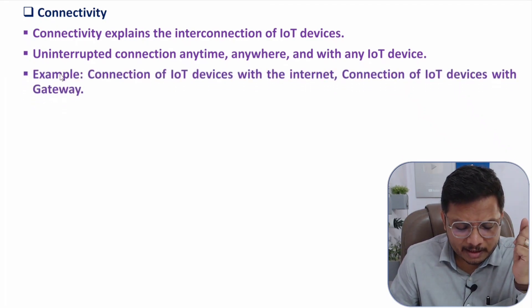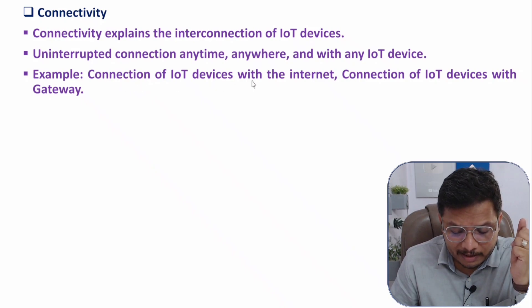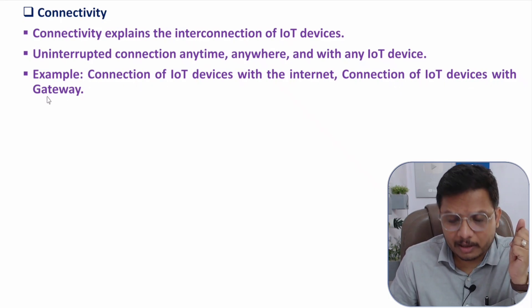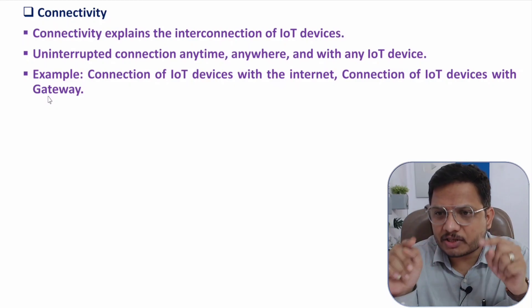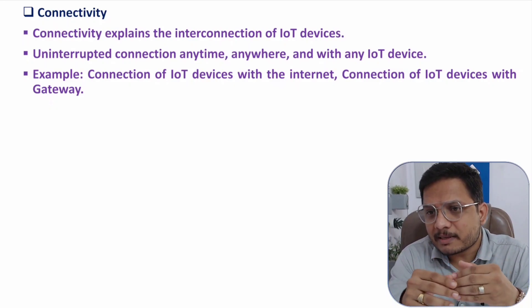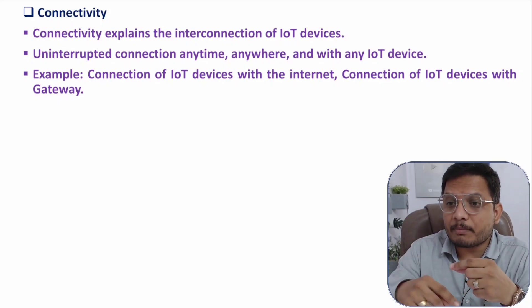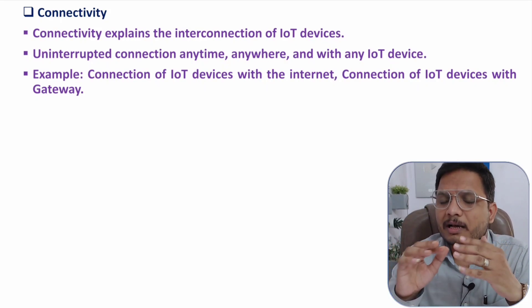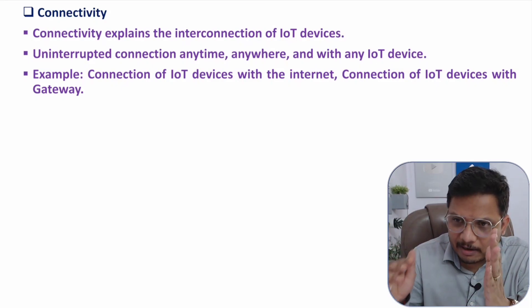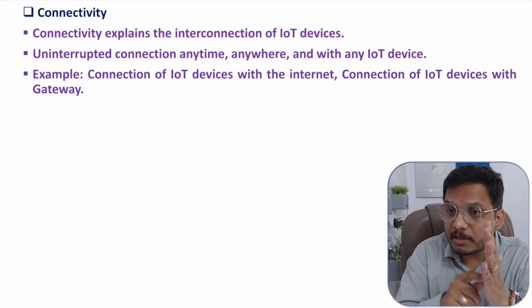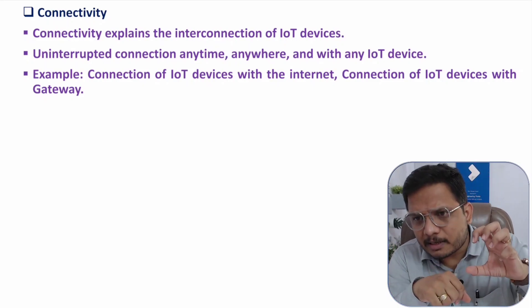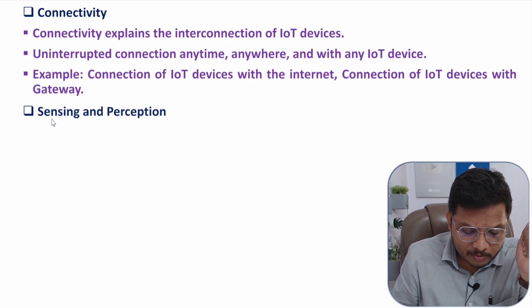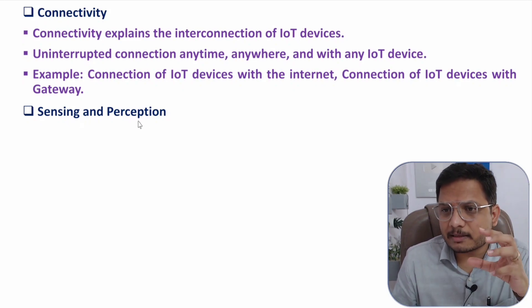For example, connection of an IoT device with the internet matters, and sometimes connection of an IoT device with a gateway also comes into the picture. As I explained in the IoT structure video, devices are interconnected with the gateway as well as providing data to the internet. Devices are the 'things,' and connecting all of them on the internet is what makes it the Internet of Things.